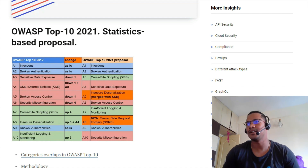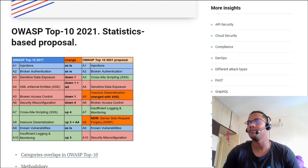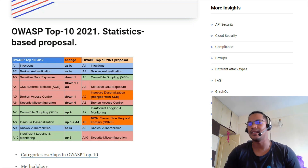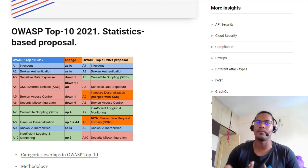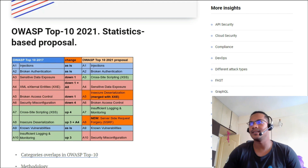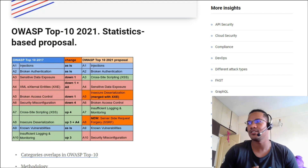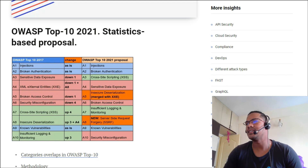Next comes sensitive data exposure, which is placed at A4 because it was really impactful in multiple ways. Another change is they have replaced broken access control with insecure deserialization, and they have combined insecure deserialization with XXE (External XML Injection). I think that's a good move because they basically fall under the same XML parsing and deserializing concept — not saying both are the same, but there's enough overlap to include them together at A5. Broken access control is now at A6, which is really important since a lot of people are finding bugs related to it — horizontal privilege escalation, vertical escalation — on many different platforms.